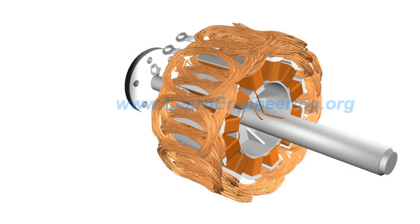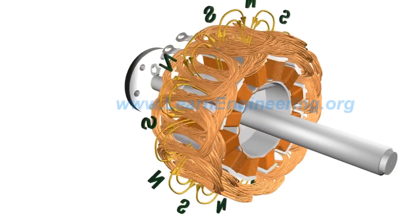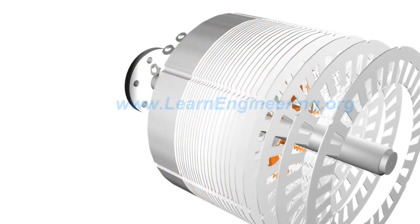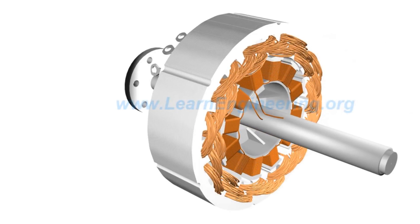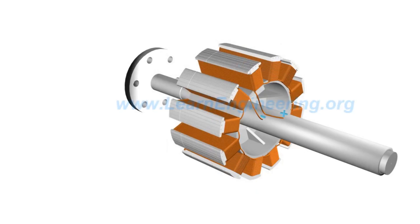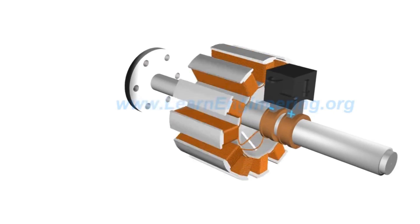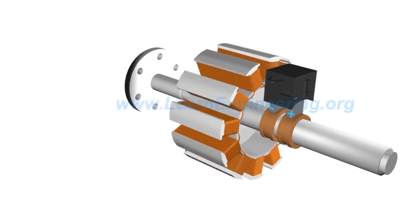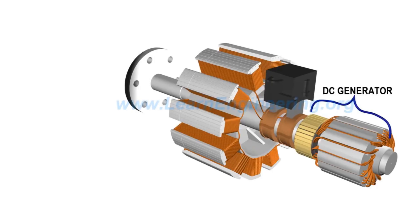The armature winding of a three-phase, 12-pole system is shown here. A stator core is used to enhance magnetic flux transfer. DC current is supplied to the rotor via a pair of slip rings, either from an external source or from a small DC generator fitted on the same prime mover. Such alternators are called self-excited.